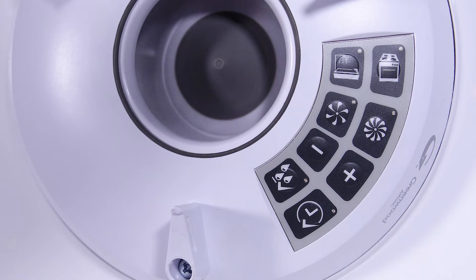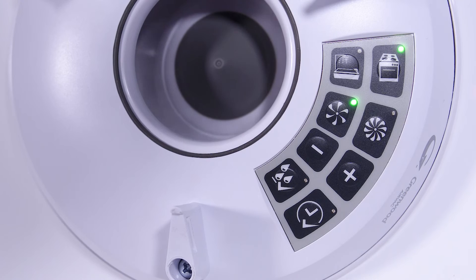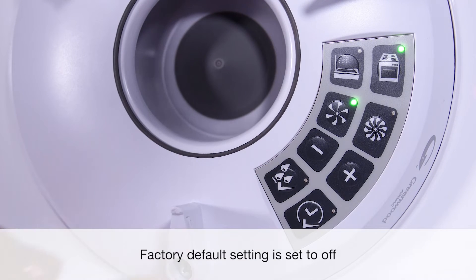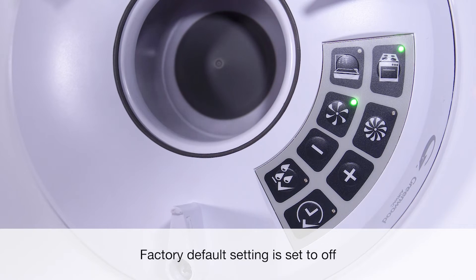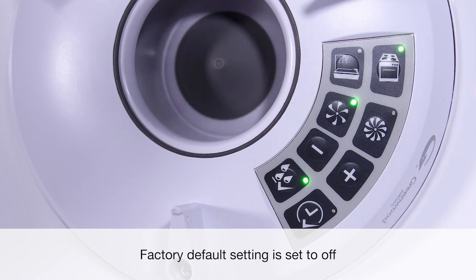To identify current fan status, press any button to activate the panel. Upon identification of control status, either press Humidi Smart to activate or deactivate the Humidi Smart function. Note the lights should come on to indicate that the function is active. The factory default setting is set to off.